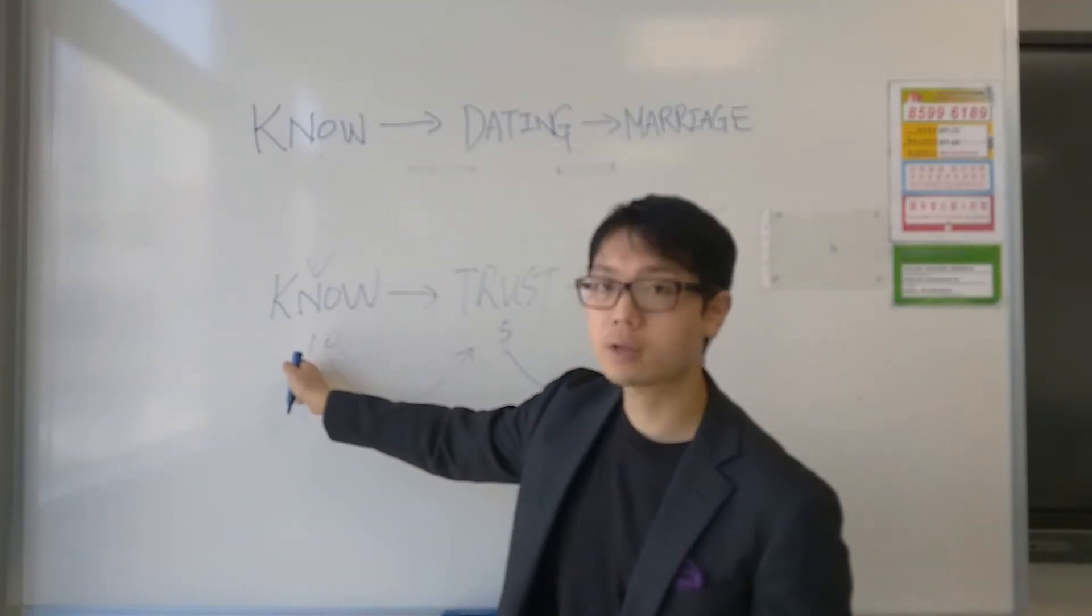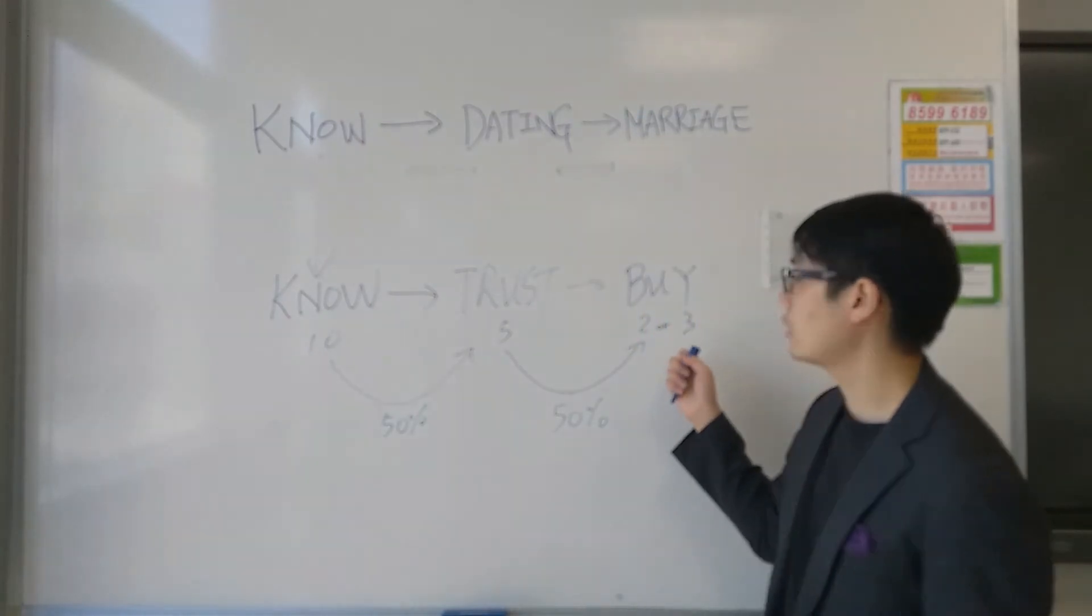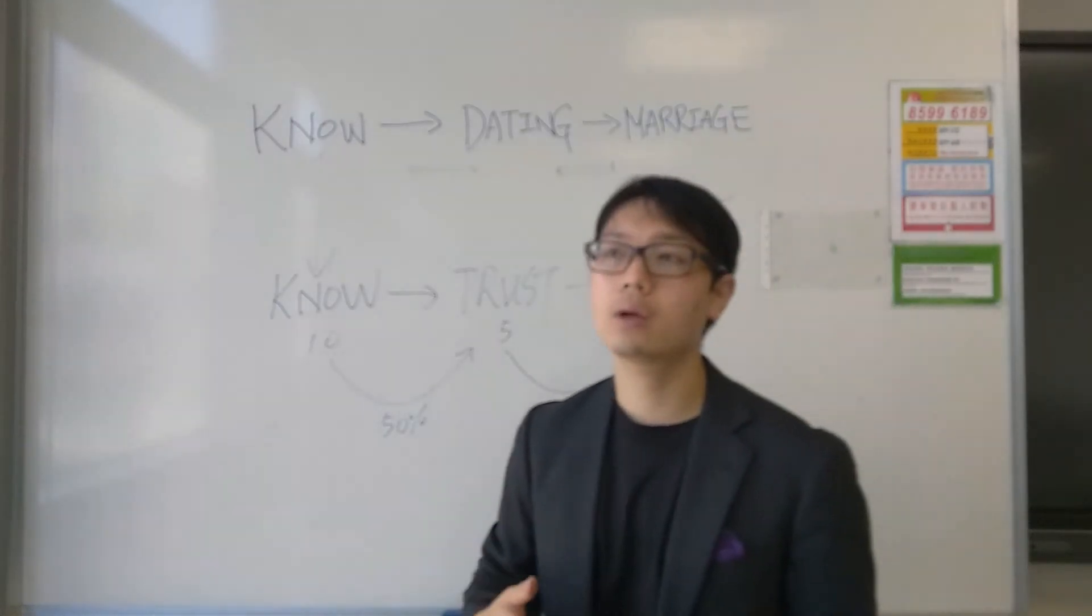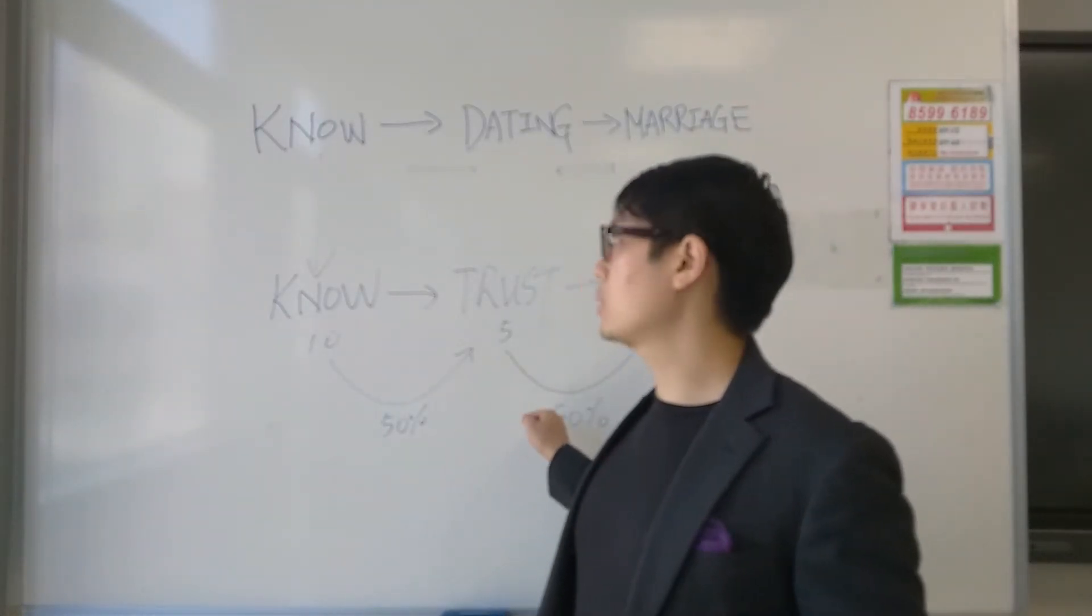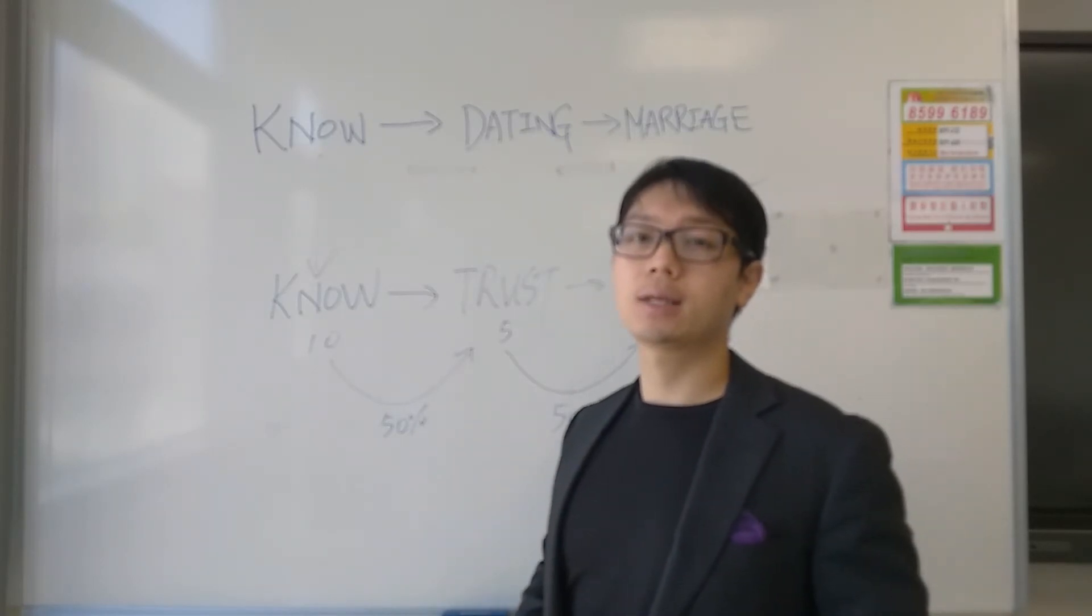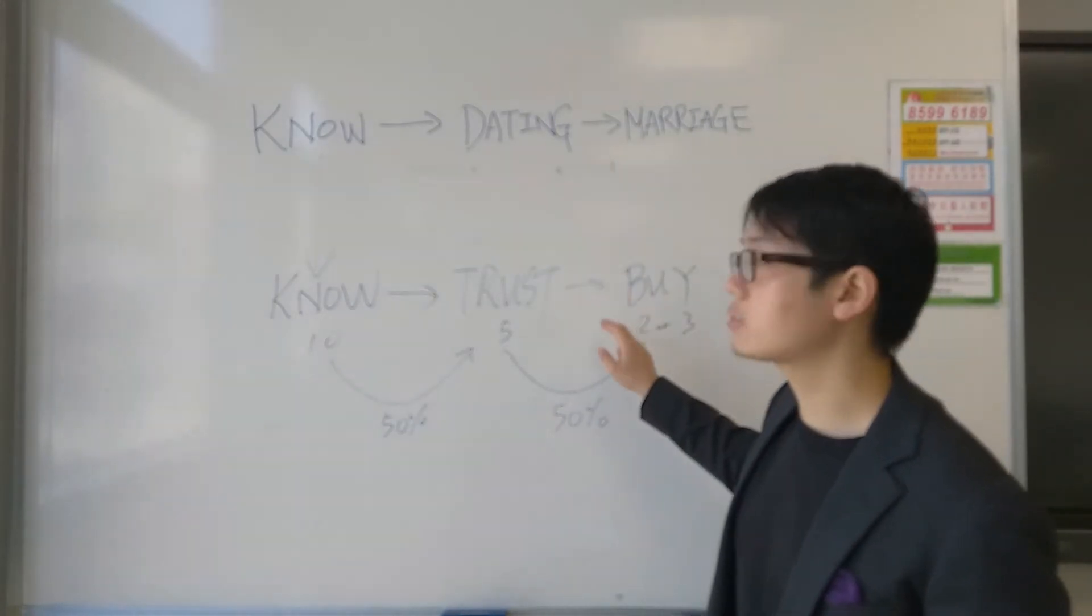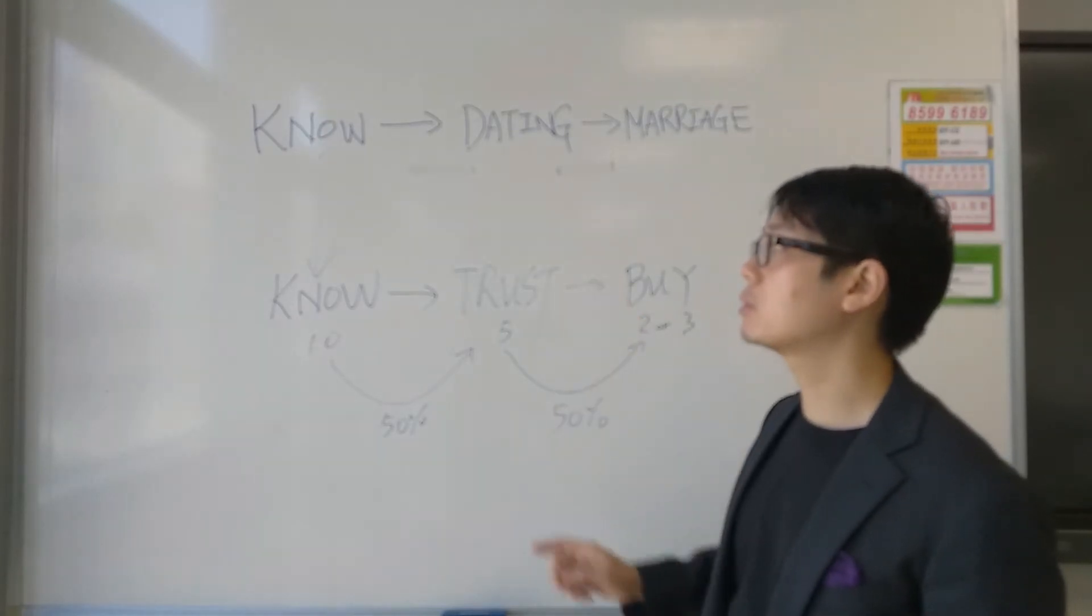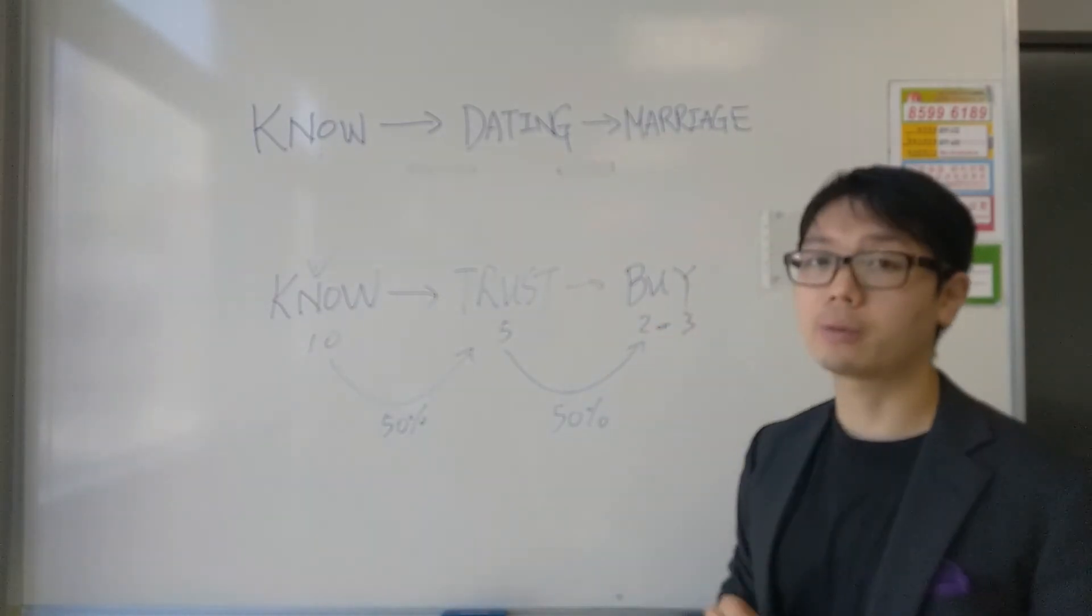Now that whole process from 10 people who knows about you, until at the end 2 or 3 people who buys from you, this is a very typical phenomenon that we see in any sales activity. Similar to getting a girl to know you, getting a customer to buy from you is a very similar process, from knowing you all the way to trusting you to buying from you.